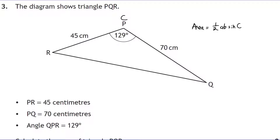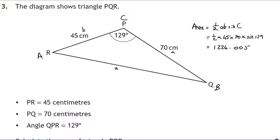A and b are interchangeable here, so we plug in: a half times 45 times 70 times sine of 129. Typing that into the calculator gives us 1224.005 — make sure your calculator is in degrees mode, not any other mode. That's the area in square centimetres.